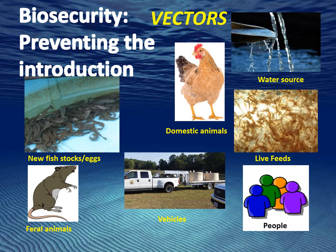The first principle is preventing the introduction. Anyone or anything that can transfer pathogens are called vectors. It is important to know what those potential vectors are and how to control them. Possible vectors include new fish stocks or fish eggs, feral animals like rats and snails, domestic animals, chickens, ducks, dogs, vehicles, your water source, live feeds, and people.